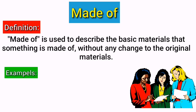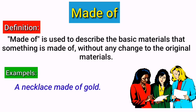Look at these examples. A necklace made of gold. In this example we have used the phrase 'made of' because the necklace is made of a material which is still recognizable, and that is gold. When something is prepared from other things and in the final product the materials are recognizable, 'made of' should be used.